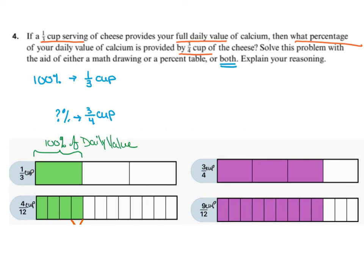So as we write them with equal size parts, the 1 third of a cup becomes 4 twelfths of a cup, and the 3 quarters of a cup is going to be equivalent to 9 twelfths of a cup, as you can see in the picture I have below. So our 100% of the daily value is here. And if I examine this portion of it, what do you notice would be the value or the percentage of each of these pieces compared to the 100%.